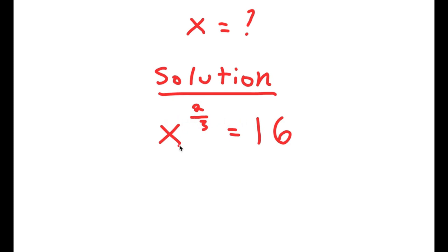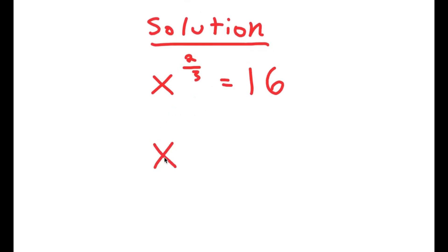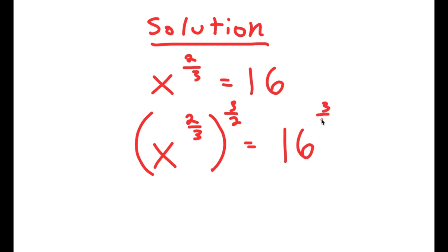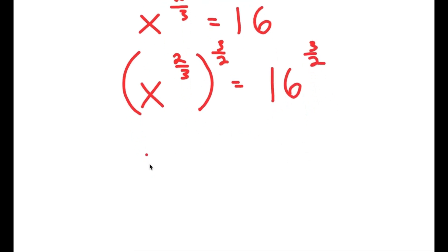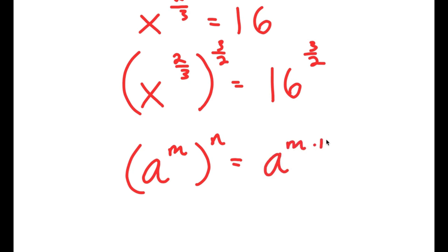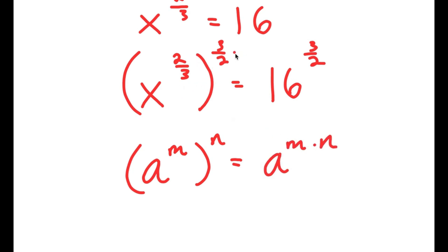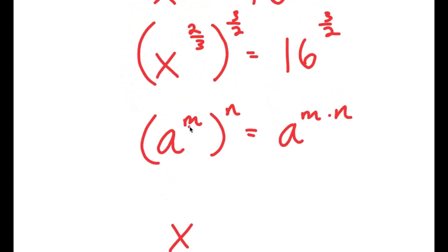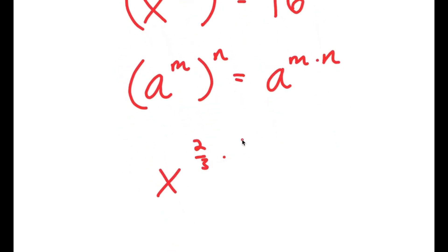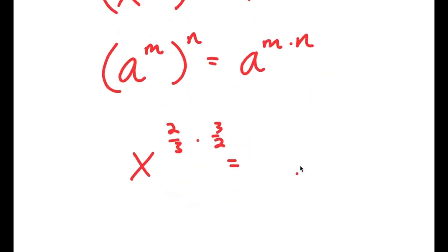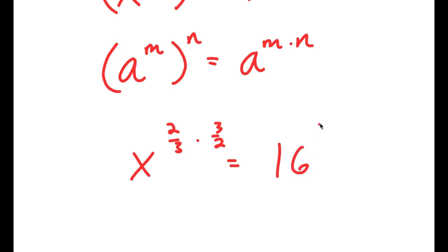What I'm first going to do is take the power of 3 over 2 on both sides. So now I have x to the power of 2 over 3 to the power of 3 over 2 is equal to 16 to the power of 3 over 2. If I have something in the form a to the power of m to the power of n, this is equal to a to the power of m times n. So x to the power of 2 over 3 to the power of 3 over 2 is the same thing as x to the power of 2 over 3 times 3 over 2, and this is equal to 16 to the power of 3 over 2.